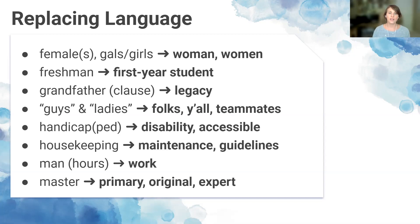The term 'grandfather clause' originated in the American South in the 1890s as a way to circumvent the 15th Amendment and prevent Black Americans from voting — a good alternative is 'legacy.' Using 'guys' to address all people is gendered language that may insinuate men are the preferred gender; use gender-neutral language such as 'folks,' 'y'all,' or 'teammates' instead. The term 'handicapped' is believed to be rooted in a correlation between a person with a disability and a beggar with a cap in hand — a better alternative is 'disability,' or referring to things as 'accessible,' such as an accessible bathroom stall or accessible parking space. 'Housekeeping' in office logistics can be replaced with 'maintenance' or 'guidelines.'